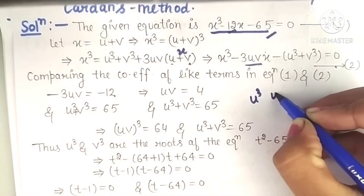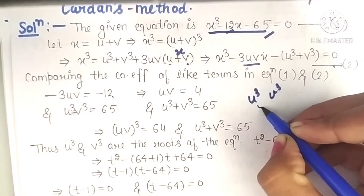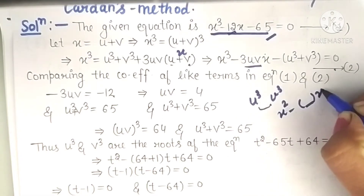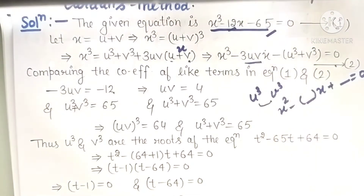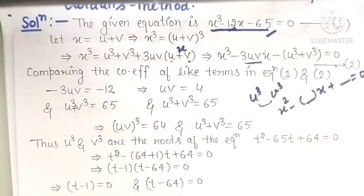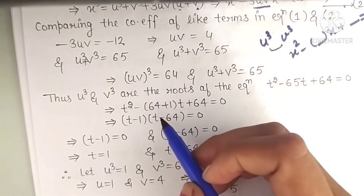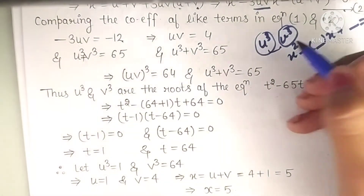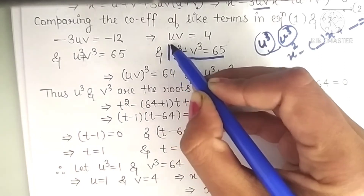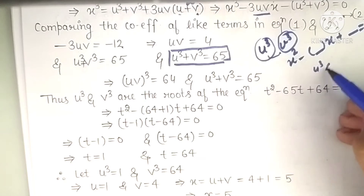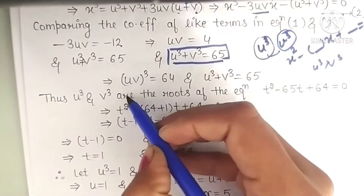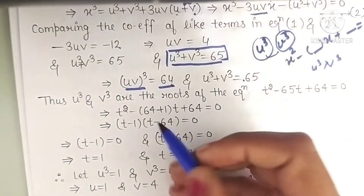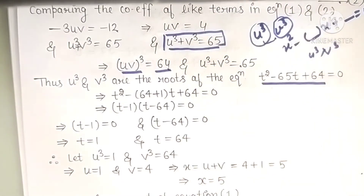We need to form a quadratic equation whose roots are u³ and v³. The quadratic equation is t² minus (sum of roots)·t plus (product of roots) = 0. We have u³ plus v³ = 65 as the sum of roots. Cubing both sides of uv = 4 gives u³v³ = 64, which is the product of roots.